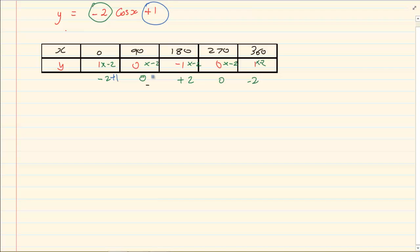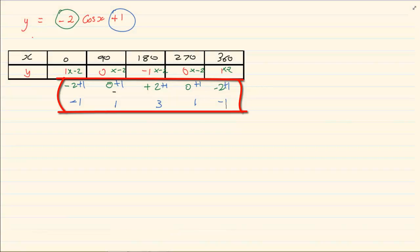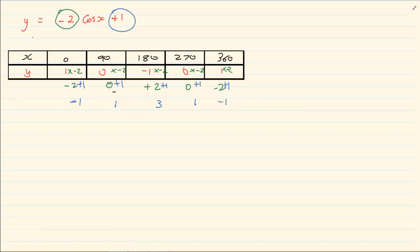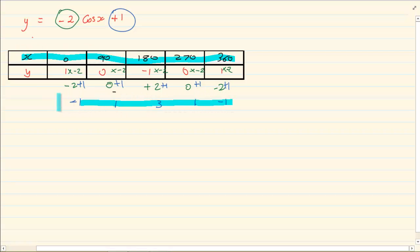So to this I am adding 1. 0 plus 1 is 1. 2 plus 1 is 3. 0 plus 1 is 1. Minus 2 plus 1 is minus 1. Right, so what do we have? Our coordinates that we are plotting. Remember our x value and our y value will be what we had added.